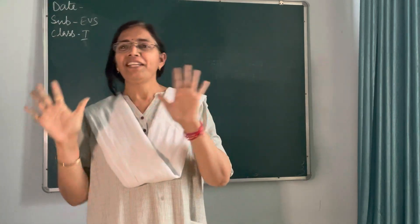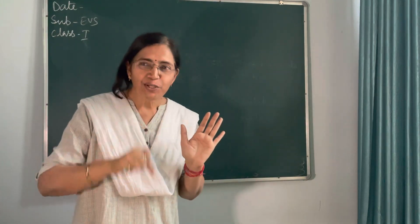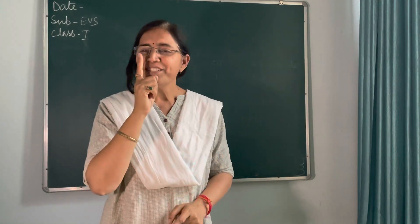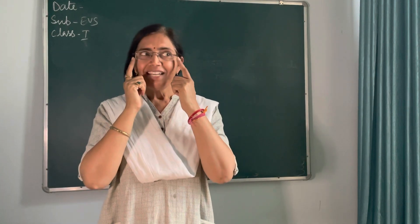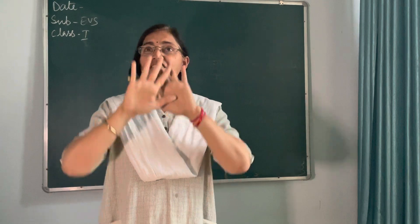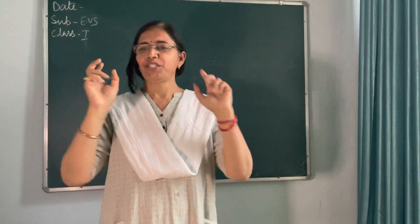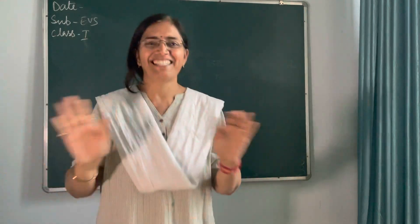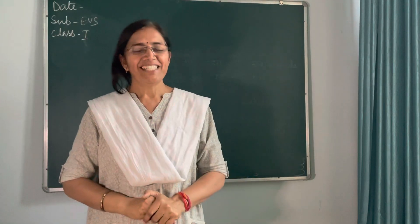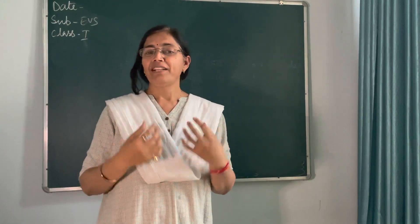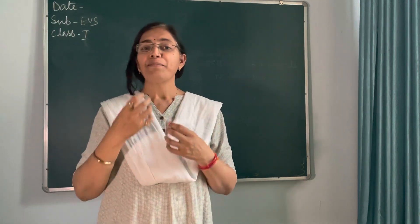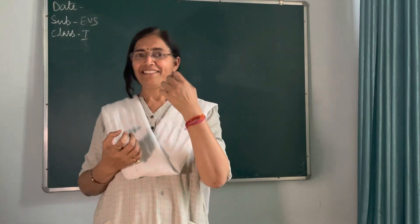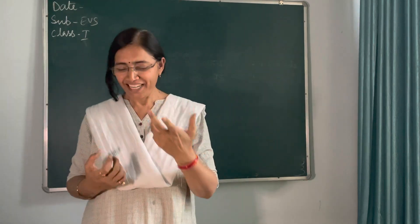Good. Now here's the poem: Ten little fingers, ten little toes, two little ears, one little nose, two little eyes shining so bright, two little lips to kiss you good night. Okay children, in this way we are going to learn some words related to your body parts.